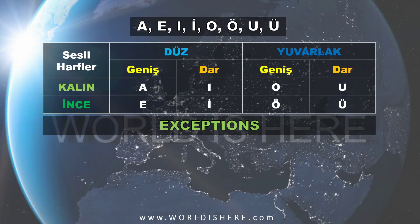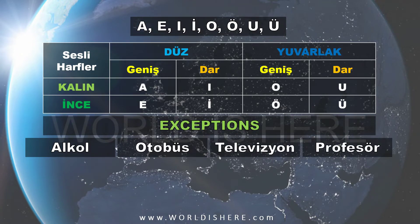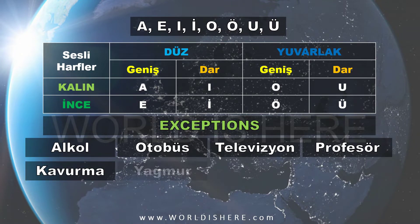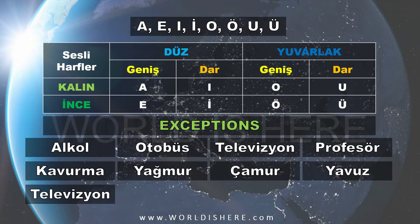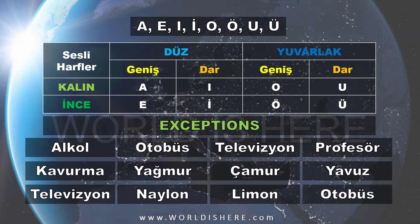According to that, we saw a table and learned some exceptions such as alkol, otobüs, televizyon, profesör. These are words that Turkish received from other languages, so büyük ünlü uyumu and küçük ünlü uyumu are sometimes not working — we don't look for that because these are not originally Turkish words. However, there are also some originally Turkish words like kavurma, yağmur, çamur, yavuz where the rules don't always work either. So don't assume that if the rule isn't working, the word is not Turkish — it's not that simple.